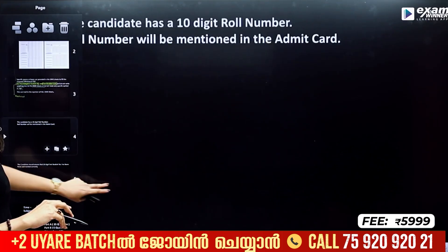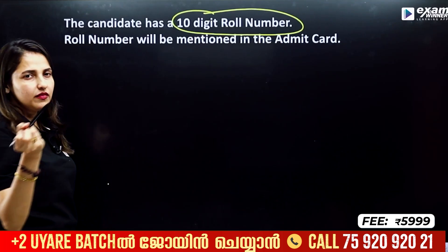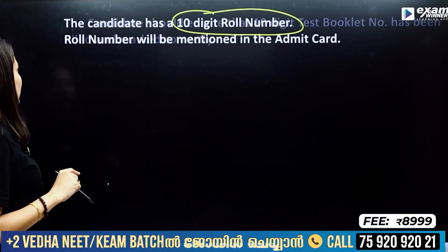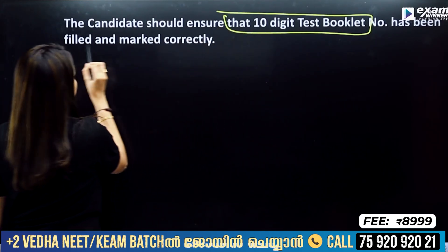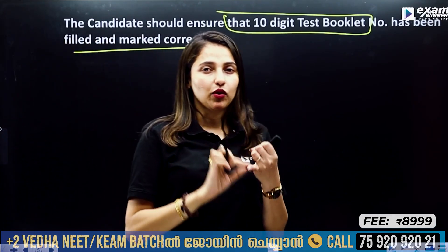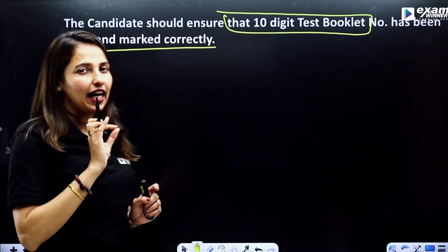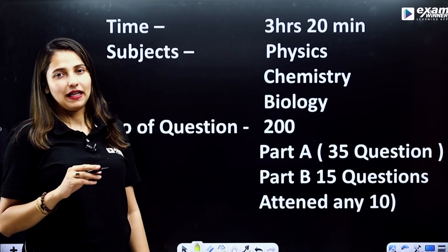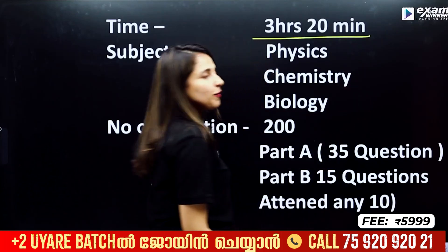The same code goes on the OMR sheet. Candidates will have a 10-digit roll number. If you listen to this video, we have a ticket. The candidates should ensure that the 10-digit test booklet number has been filled and marked correctly, so you will be able to check the booklet number correctly and fill it in order to ensure your exam details.